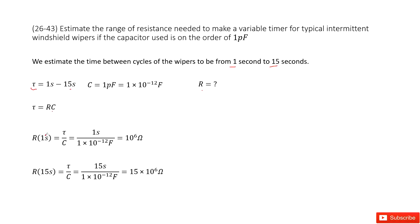So at 1 second, R equals tau divided by C. The tau in this case is 1 second, so R(1s) = 1s / (1×10^-12 F) = 10^6 ohms.